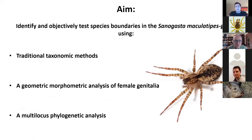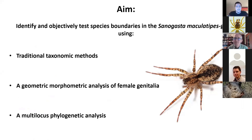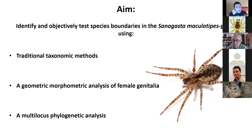We knew that the female genitalia was taxonomically informative but that the boundaries were ambiguous. Because the female genitalia is a somewhat two-dimensional structure, it lends itself well to geometric morphometrics. So we wanted to use landmark-based geometric morphometrics to clarify those boundaries, identify any cryptic species within the group, and combined that with a multi-locus phylogenetic analysis to put the morphological findings in a phylogenetic context.